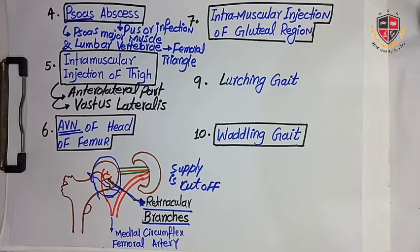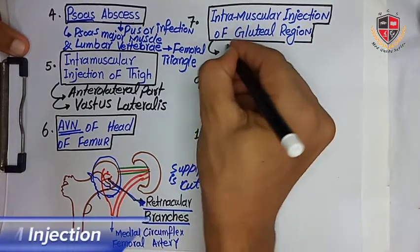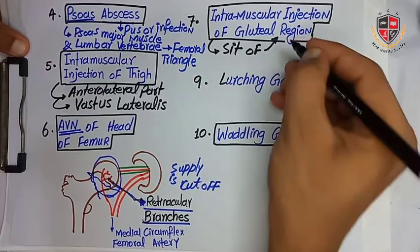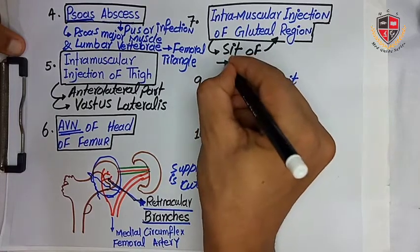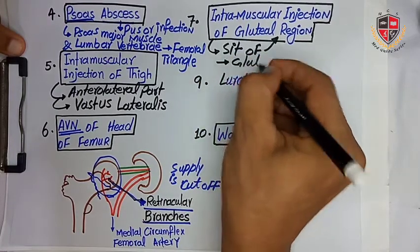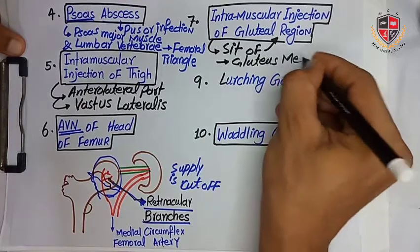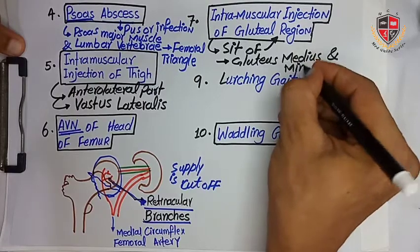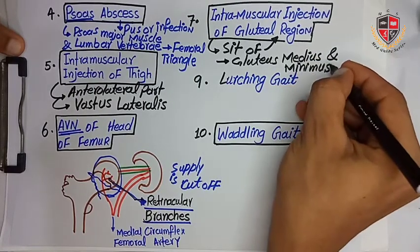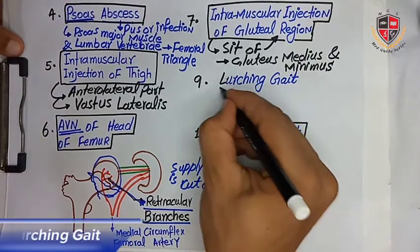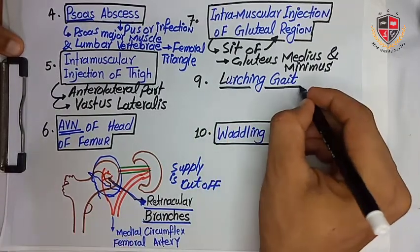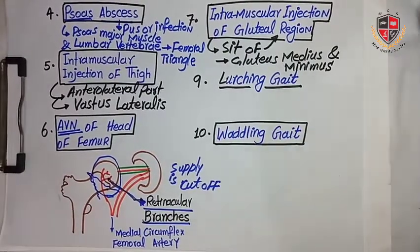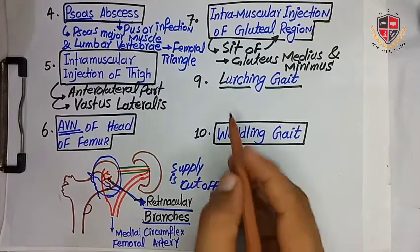The next clinical is intramuscular injection of the gluteal region. The site of intramuscular injection in the gluteal region is gluteus medius and gluteus minimus, located in the upper lateral quadrant — the superior outer quadrant — of the gluteal region. This region is chosen because it prevents damage to the sciatic nerve.